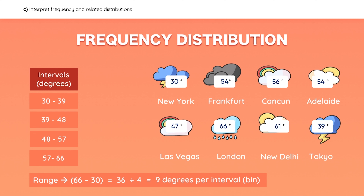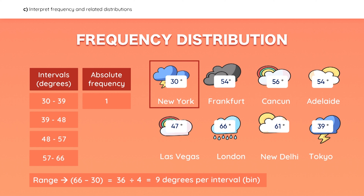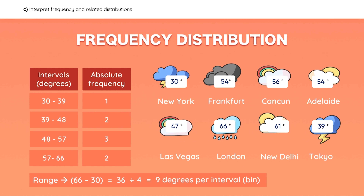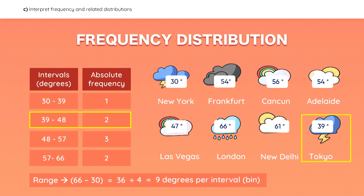Now we simply have to tally the observations in each bin to get the absolute frequency. Only one city has a temperature between 30 and 39 degrees, there are two cities that fall within the second interval, and so on. Be very careful when counting because the intervals overlap — there are two bins that contain 39 degrees. So if a city has a temperature of 39 degrees like Tokyo, remember to always place it into the higher bin when tallying observations.